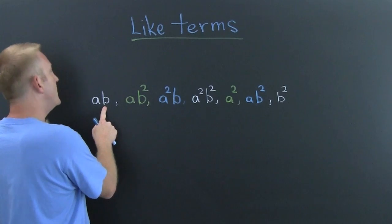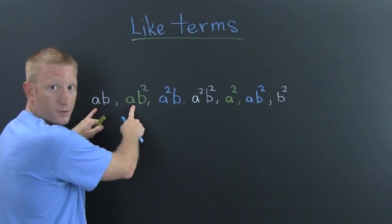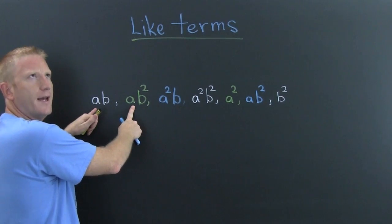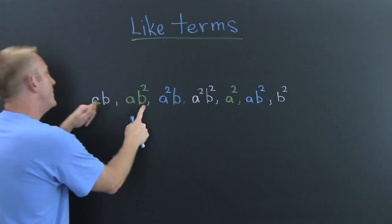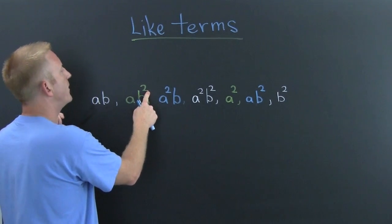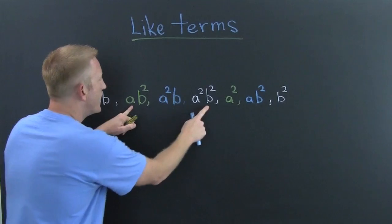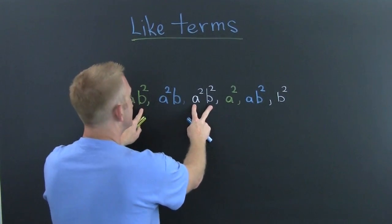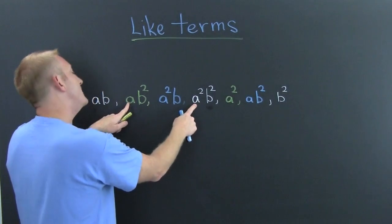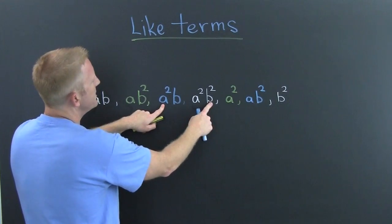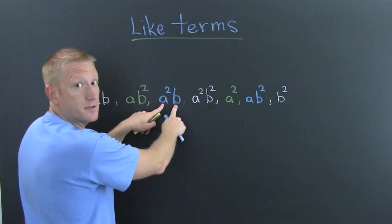Here we have AB. Is this one like that one? No — although they do have like variables. Like terms are terms with exactly the same variables raised to exactly the same powers. They both have AB, but that B is squared. So is this one like that one? There B is squared and they have the same variables, but they're not raised to the same powers — there we have A, and there we have A squared.